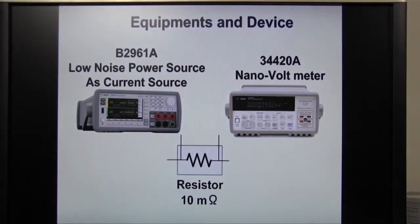Today, I would like to show you how to measure a 10 milliohm resistor by using B2961A and 34420A. B2961A is a voltage current source. I will use this as a DC current source. 34420A is a nanovoltmeter to measure the voltage.